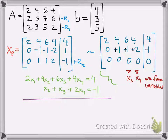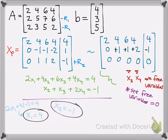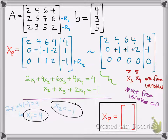Once we set all our free variables equal to 0 — so x3 equals 0 and x4 equals 0 — look at the second equation: x2 plus x3 plus 2x4 equals negative 1. If we set x3 and x4 equal to 0, we just have x2 equals negative 1. Then plug that into the first equation and simply solve for x1, and you should get x1 equals 4. That's how we find the particular solution. Our particular solution has x1 and x2 solved, and x3 and x4 set to 0, giving us 4, negative 1, 0, 0.